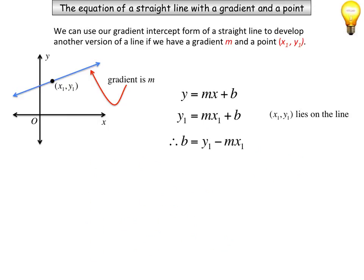And if I subtract the mx1 to the other side, I have our y-intercept. So no matter what the straight line is, this little relationship I can substitute into back into my original equation to find out a relationship, but that's where it crosses the y-axis.